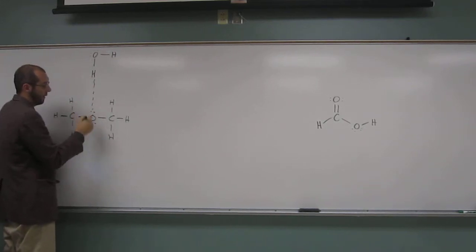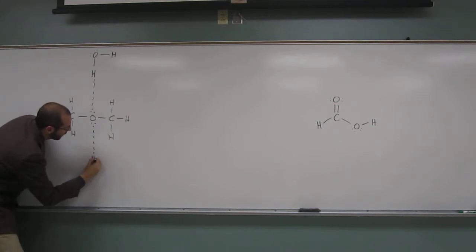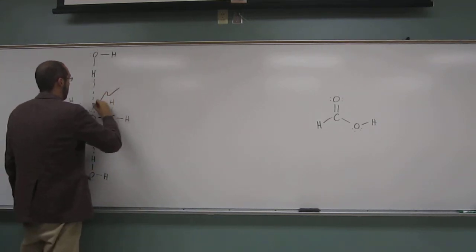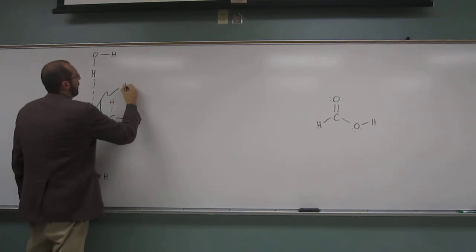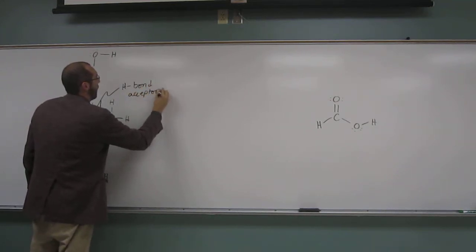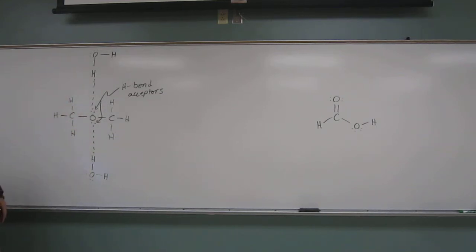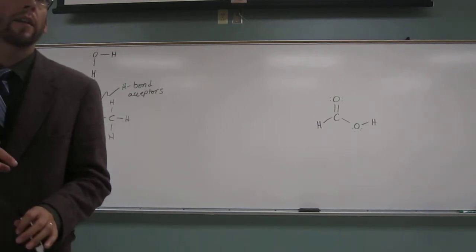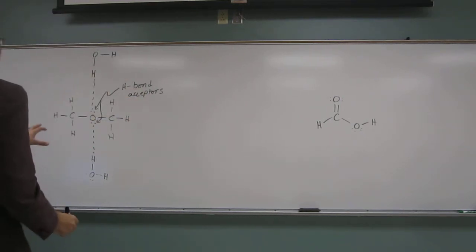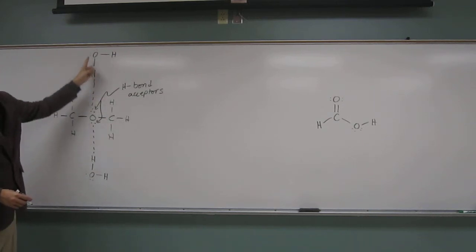So, like that. So, these lone pairs are actually called hydrogen bond acceptors. Okay? So, in fact, this has two hydrogen bond acceptors. Is everybody okay with that? No donors. No donors. Okay? So, it doesn't have any hydrogen bond donors. Why? Because to be a donor, I have to have one of those electronegative atoms attached to a hydrogen, and I don't have that here. Of course, with water, it's got a donor. It's got two donors and two acceptors. Does everybody see that?